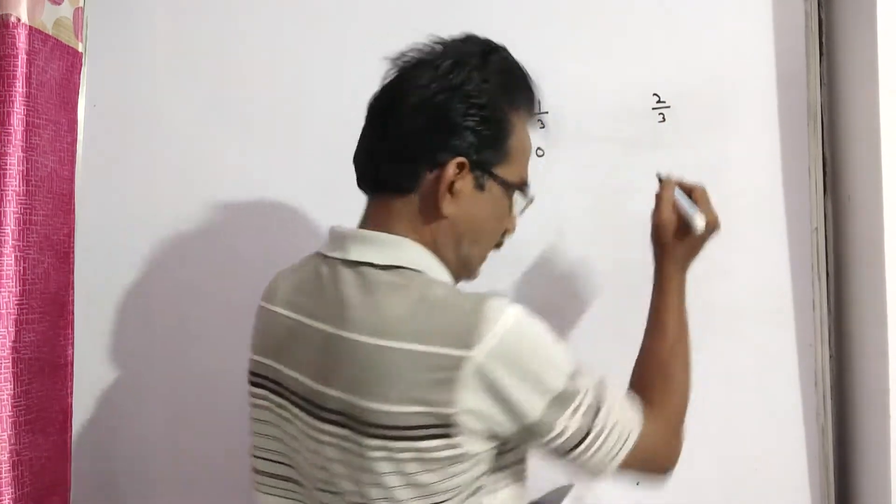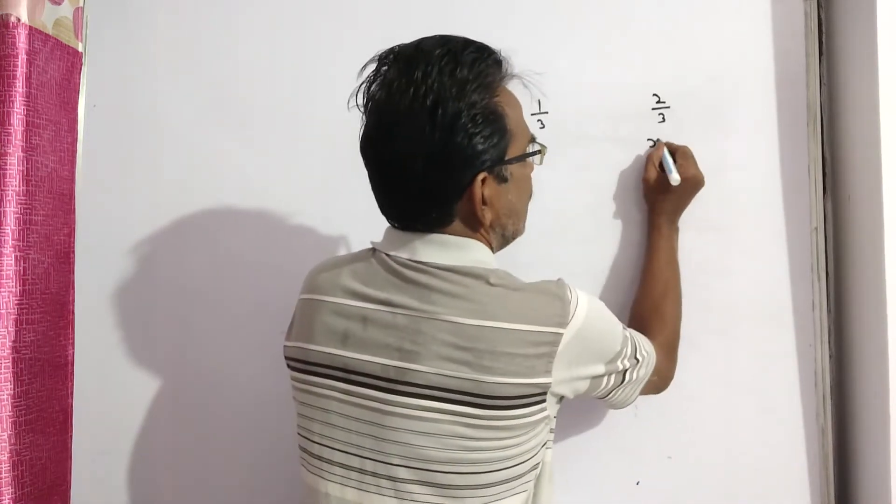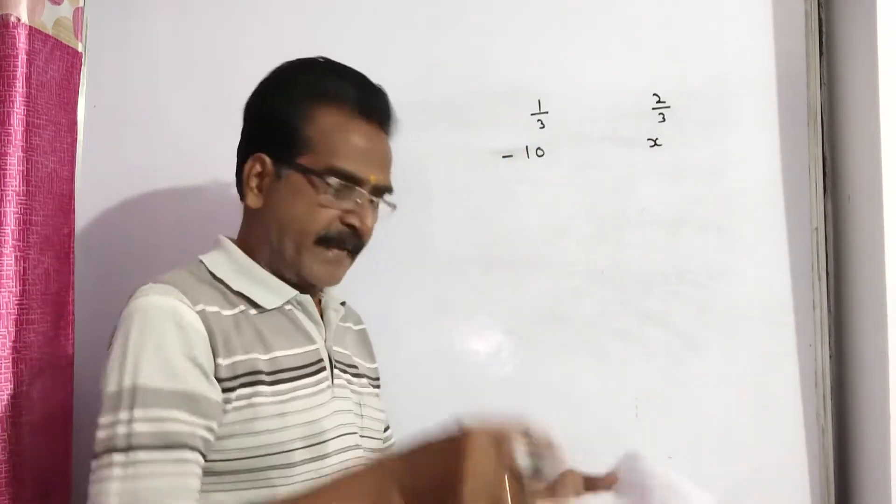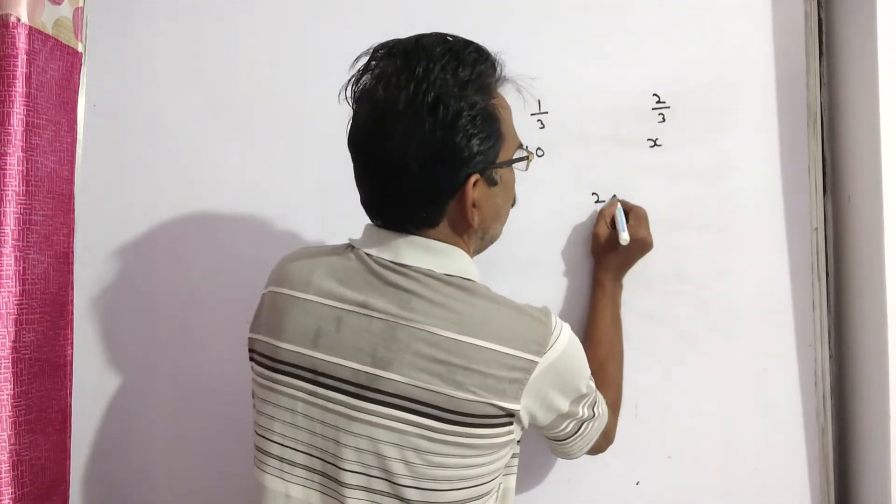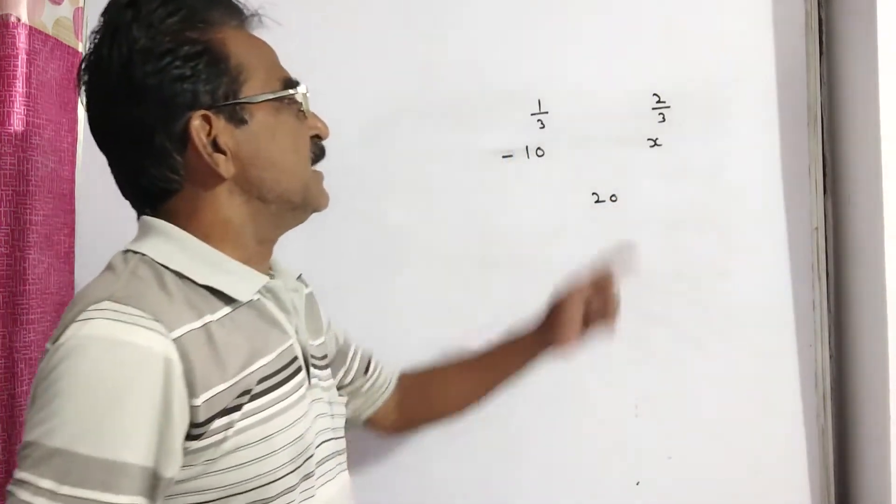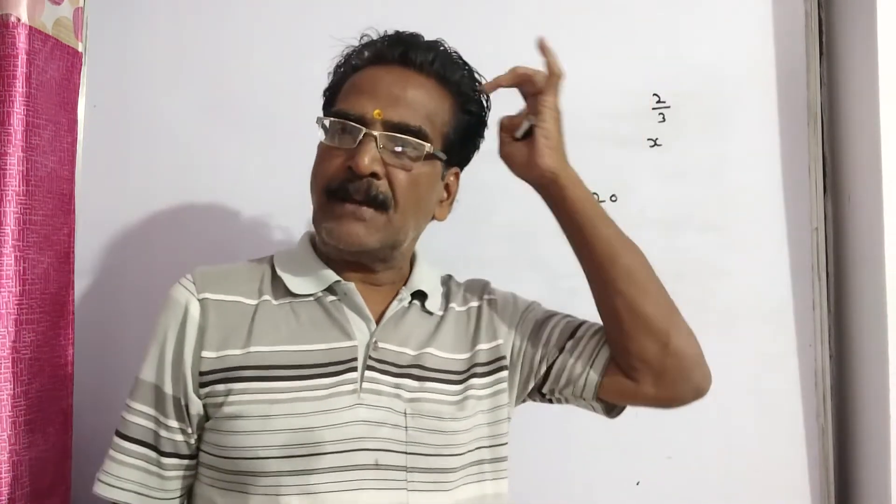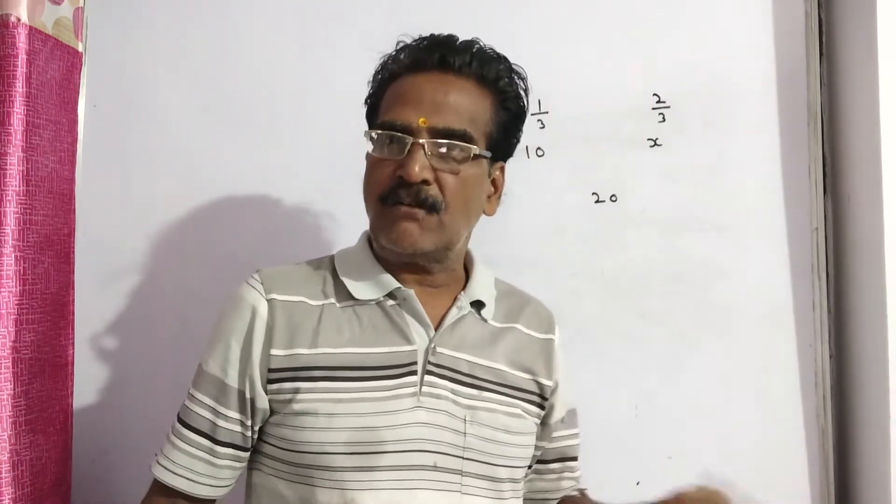Then the overall gain is 20 percent. This is the setup. By rule of allegation we get the quantities ratio.